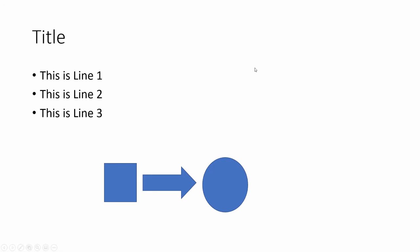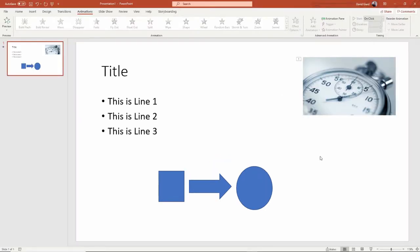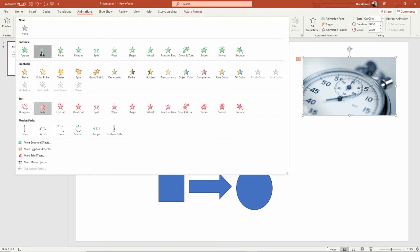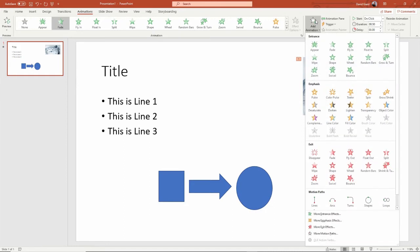It exits — it fades out. There are different types of entrances and exits and so on. But really what I want to do is add an entrance fade in, and if I want to have it fade in on the first mouse click and then fade out on the second one, then I need to use Add Animation.